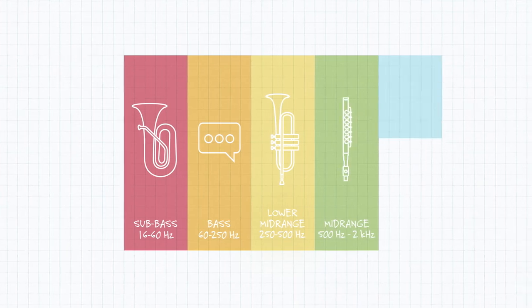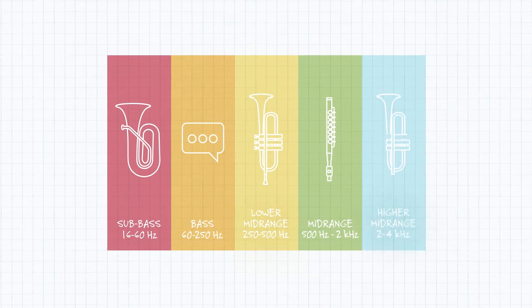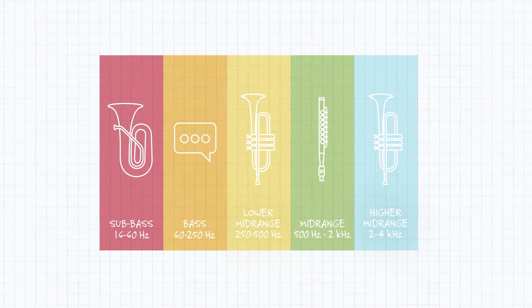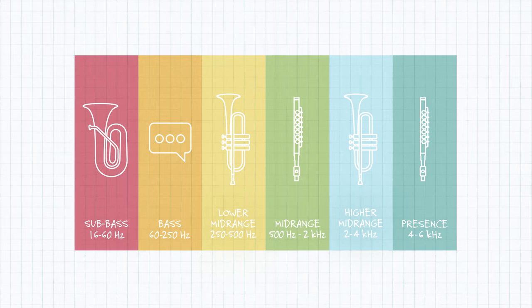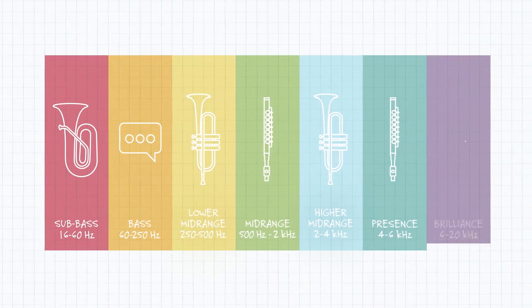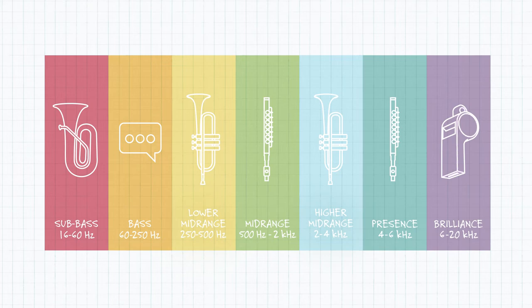Once we hit the higher mid-range, at 2 to 4 kHz, we start to see the harmonics of those lower instruments, like the trumpet. Next is what's called presence, from 4 to 6 kHz, where you get the harmonics for the higher instruments, like the piccolo. Finally, brilliance is the highest subset, ranging from 6 kHz to 20 kHz, and is so high-pitched that this is usually filled with sounds more like whines and whistles.